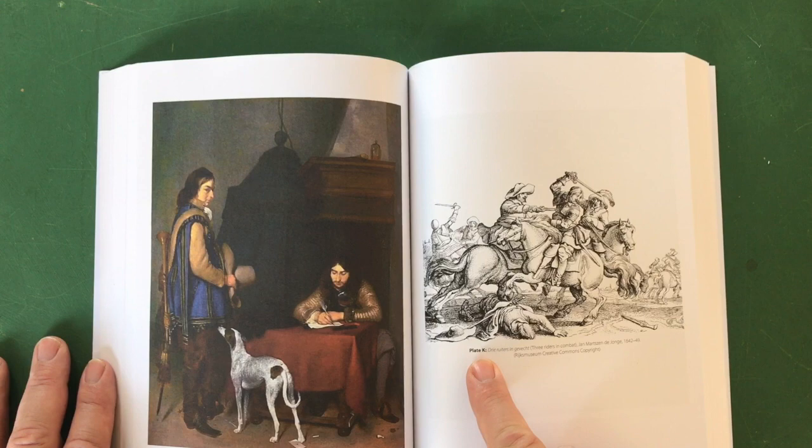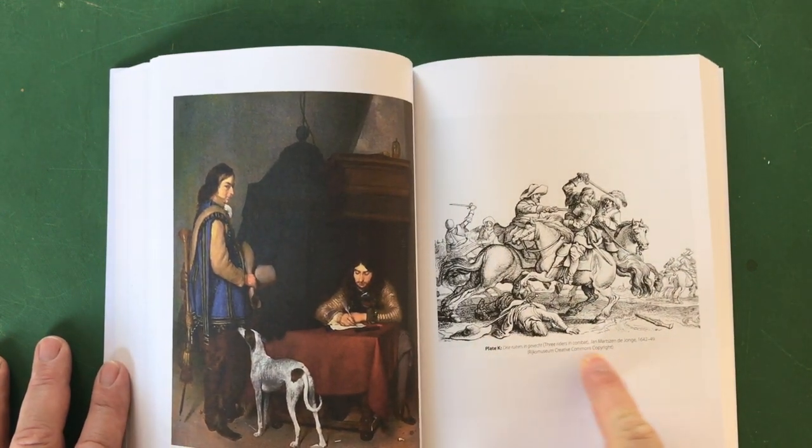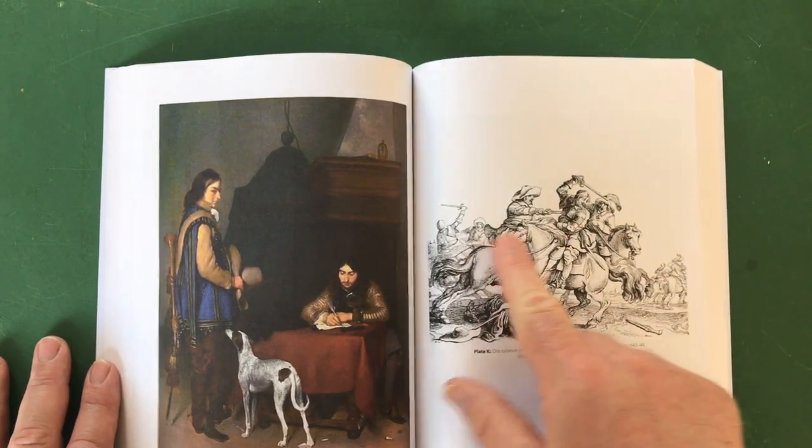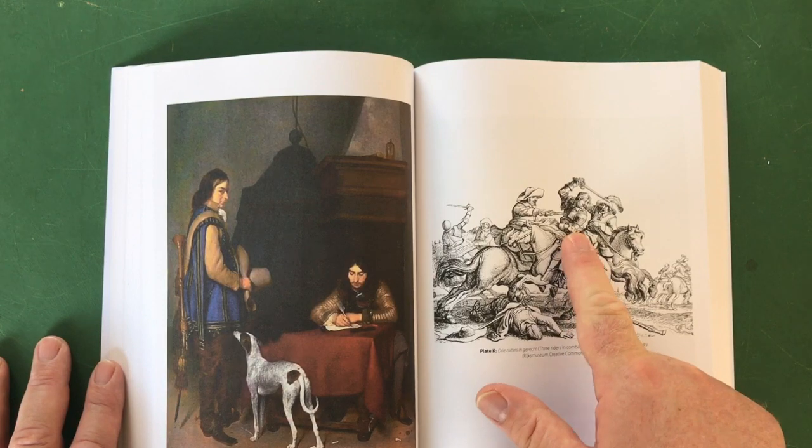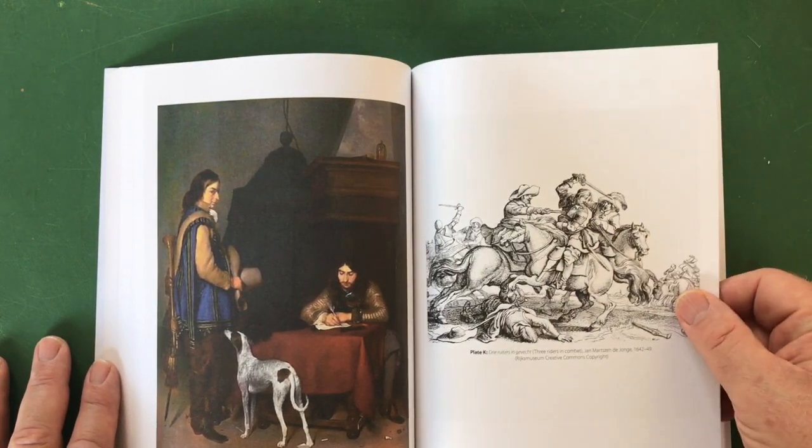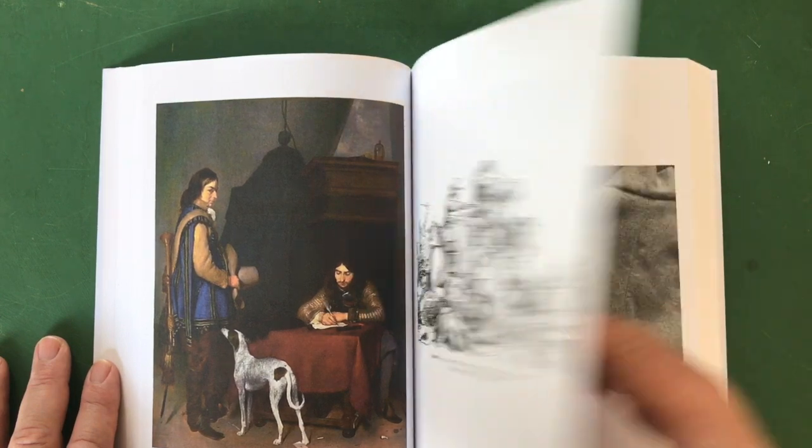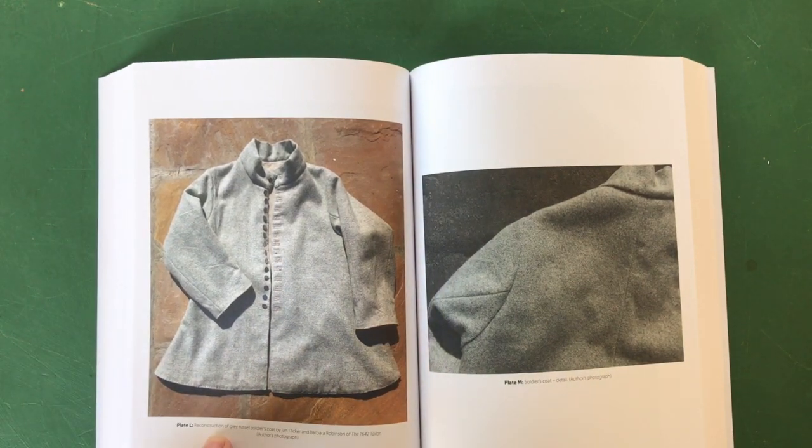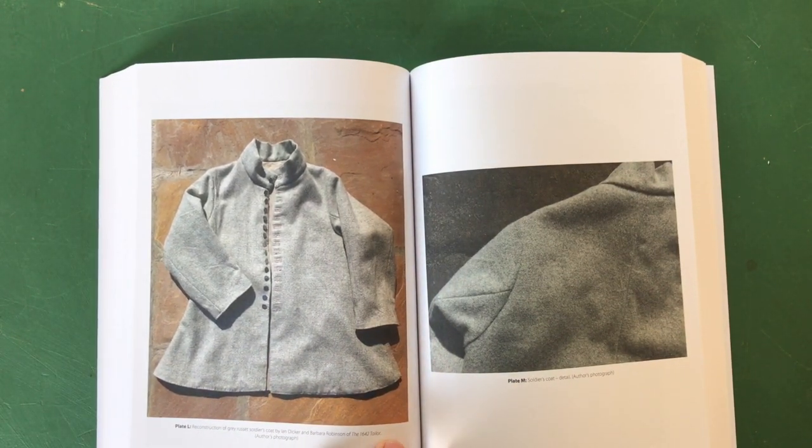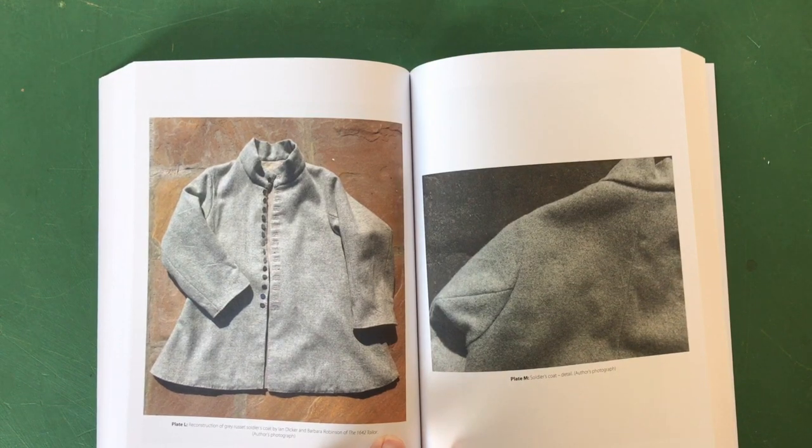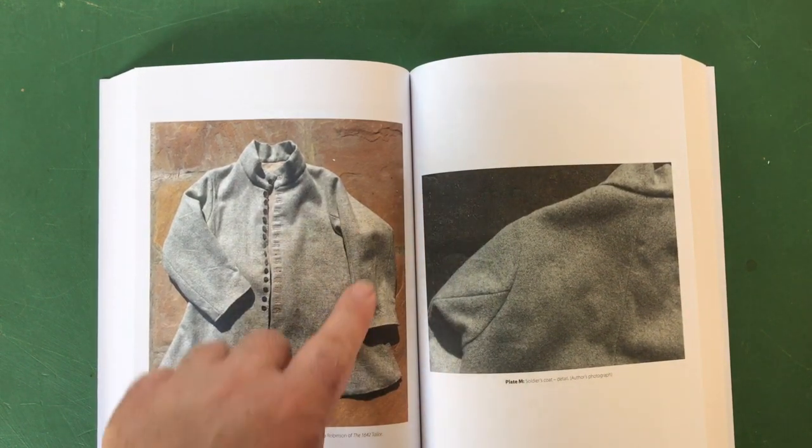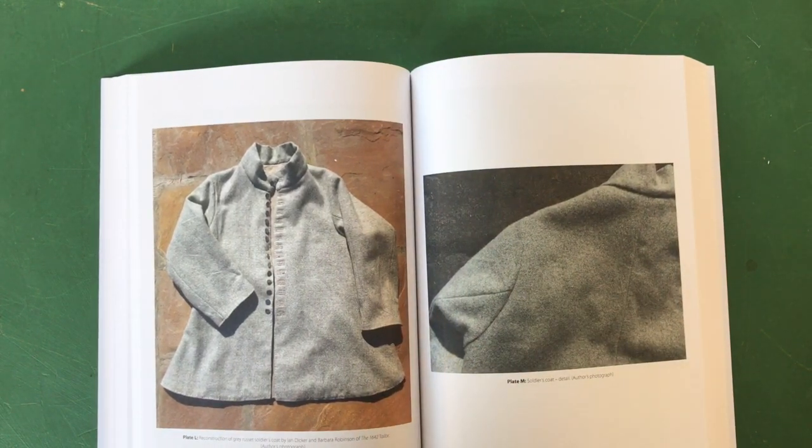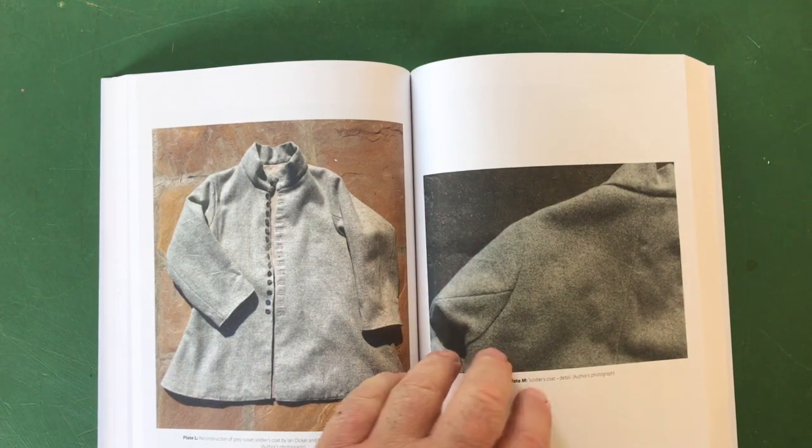A nice engraving - three cavalrymen in combat, that's a nice little picture there. Obviously one of them is a cuirassier or certainly wearing half armor whilst the other two are more lightly clad. Here's some really interesting material in the book: reconstruction of a gray russet soldier's coat by Ian Dicker and Barbara Robinson of the 1642 Tailor. That's really nice to see. Gives you some really good interesting detail about how the clothing was made, the kind of material it was made from.